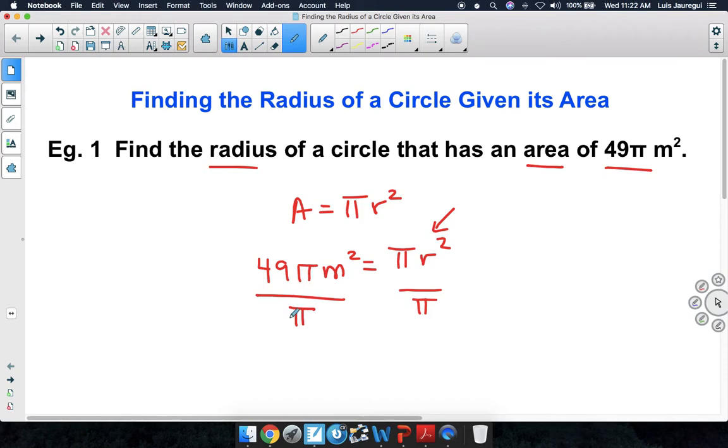By doing so we're going to get pi divided by pi which is 1 and 1 times 49 will give you 49 times the square meters here and that should be equal to pi divided by pi which is 1 and 1 times r square is simply r square.